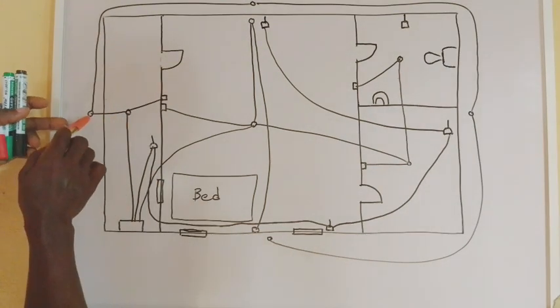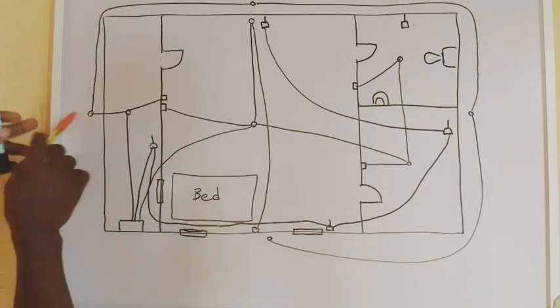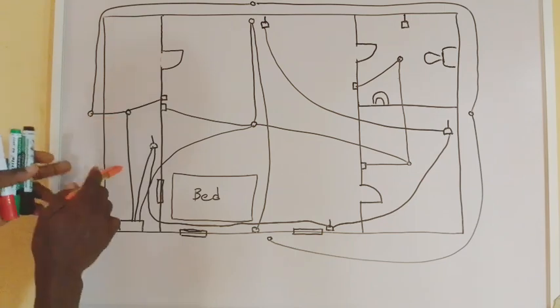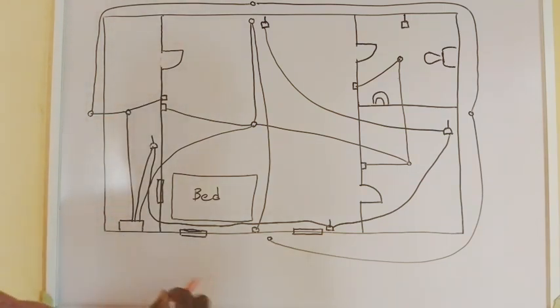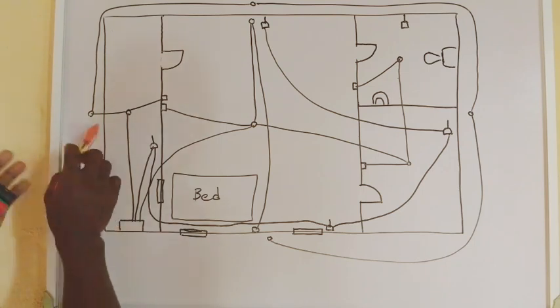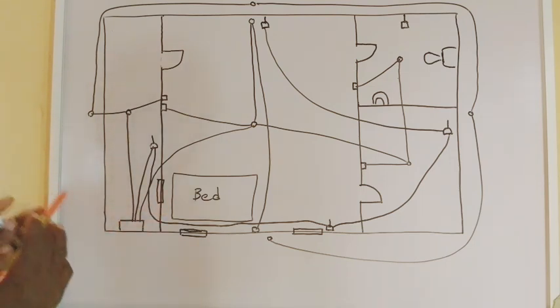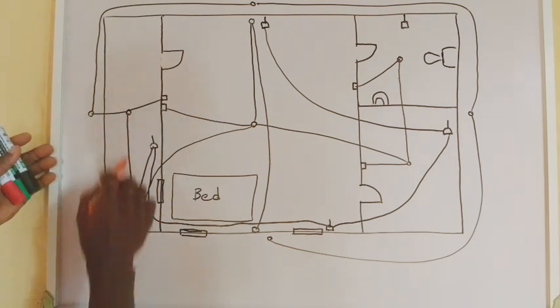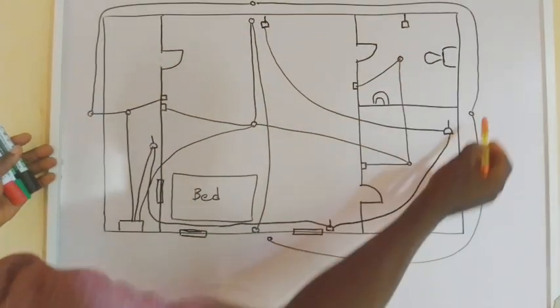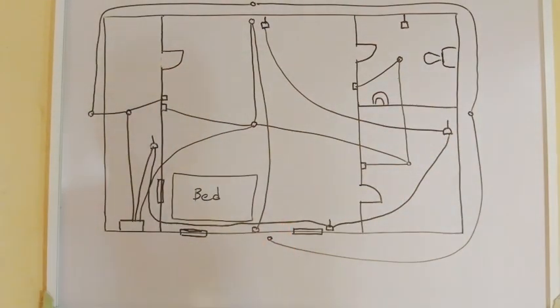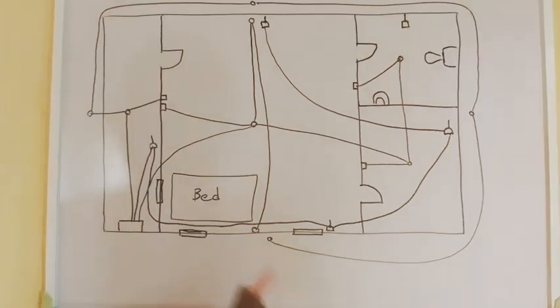Now we added another security light outside, before you enter the building. Because security is very important. So we are not going to omit any of the security lighting points. So here, we have one, two, three, four, five. I think four lighting points for that circuit is okay.